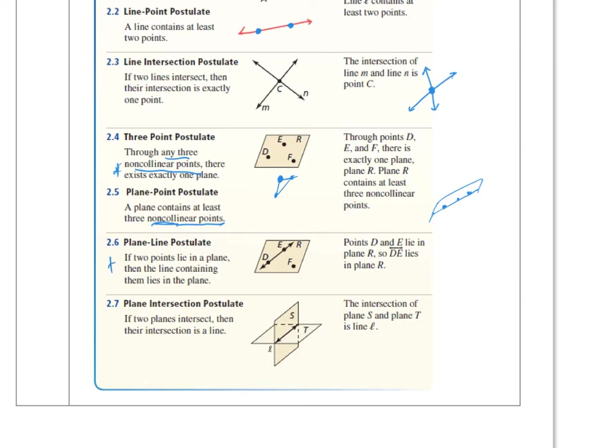On this next one, it says if two points lie in a plane, then the line containing them also lies in the plane. So the two points that I needed to make this line, those two points are in a particular plane, and so is that line. The two points and the line that contains them will be in the same plane.